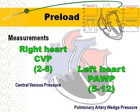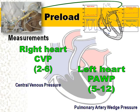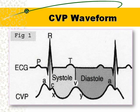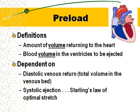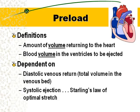How do we measure preload? In the ED, we only have the CVP. With a Swan-Ganz catheter, you could measure both right and left heart: CVP or right atrial pressure, which is 0–10 or 2–6 depending on the textbook, and the pulmonary artery wedge pressure — but in the ED we don't have this. Preload is the blood volume in the ventricles waiting to be ejected, dependent on how full the tank is, the total volume in the venous bed, and diastolic venous return. This relates to Starling's Law of Optimal Stretch.